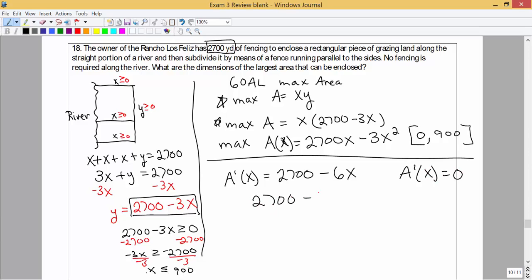So 2700 minus 6x equals 0. We're going to add 6x to both sides, and then divide both sides by 6, and I get 450 is equal to x.